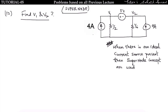Now see this problem. We have to find v1 and v2. If you apply nodal equation, you get minus 1 plus v1 divided by (1/2), but you don't know the current flowing through the ideal voltage source. Since you can't apply nodal directly when an ideal voltage source is present between two nodes, this is where the super node concept is used.